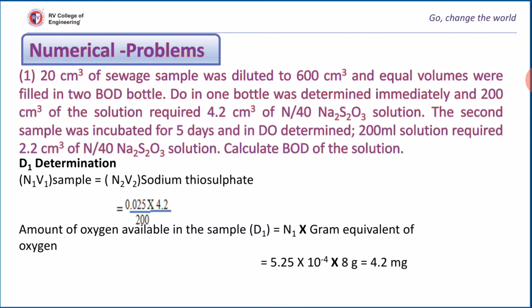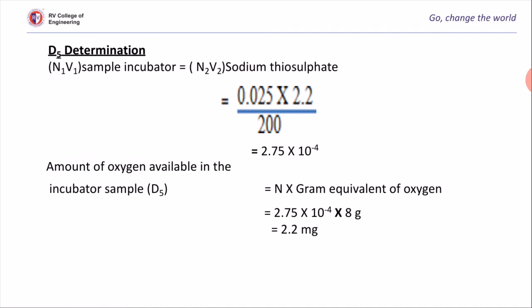By using law of volumetry, first you have to calculate the strength. Then finally you can calculate the amount of oxygen present in the water sample. So D1 comes out to be around 4.2 mg per dm cube. Similarly, you can calculate D5. Its value comes out to be 2.2 mg per dm cube.